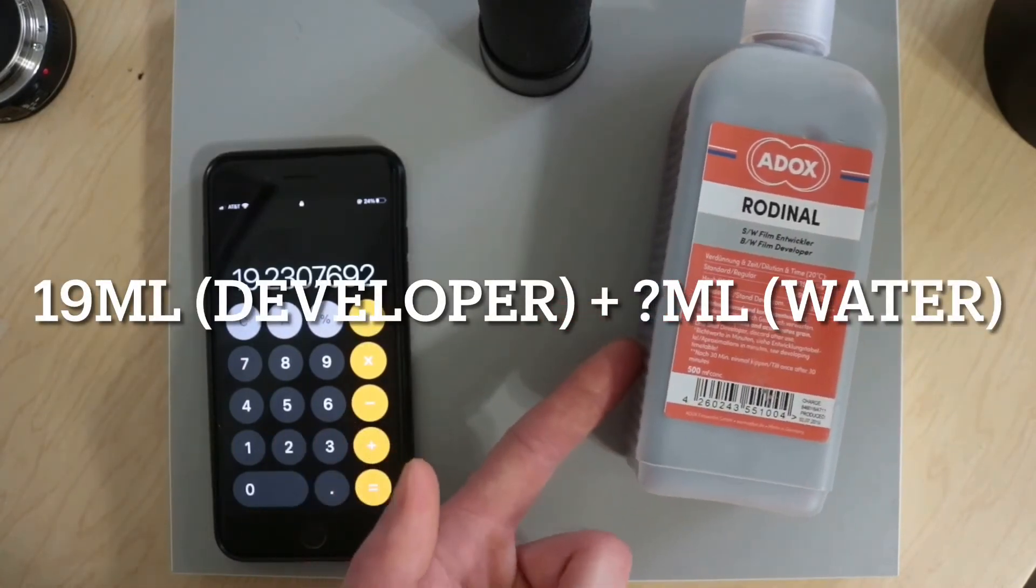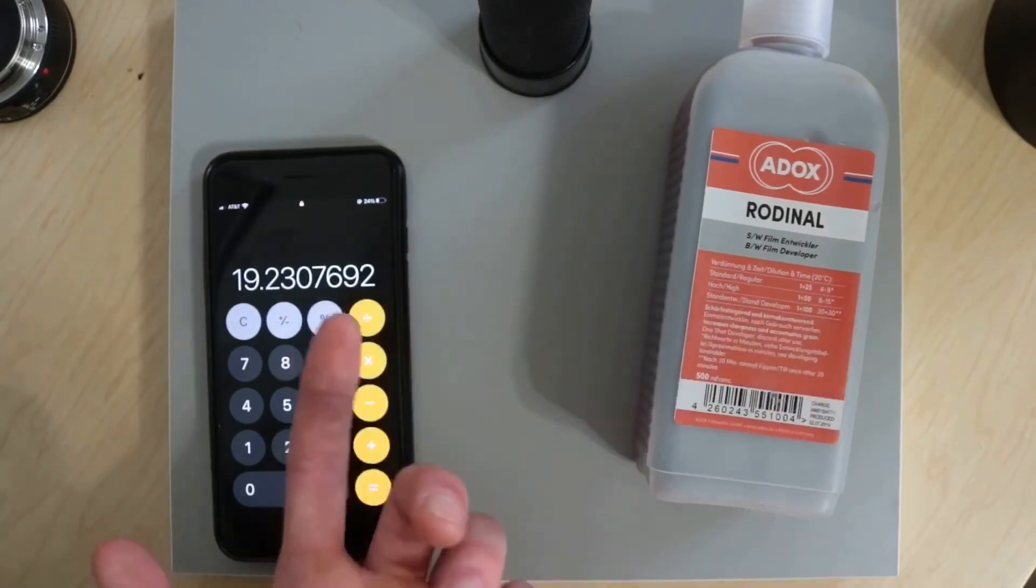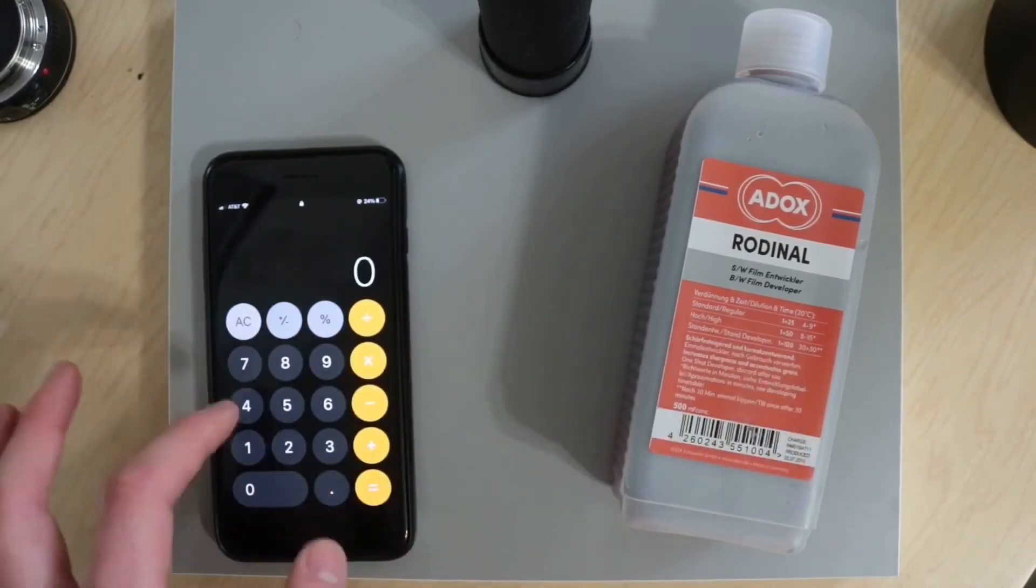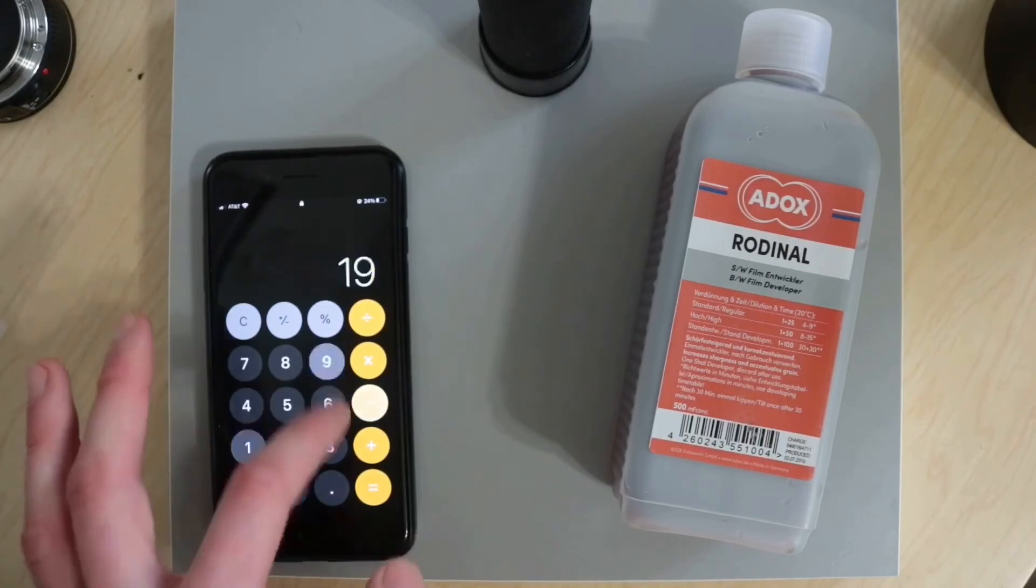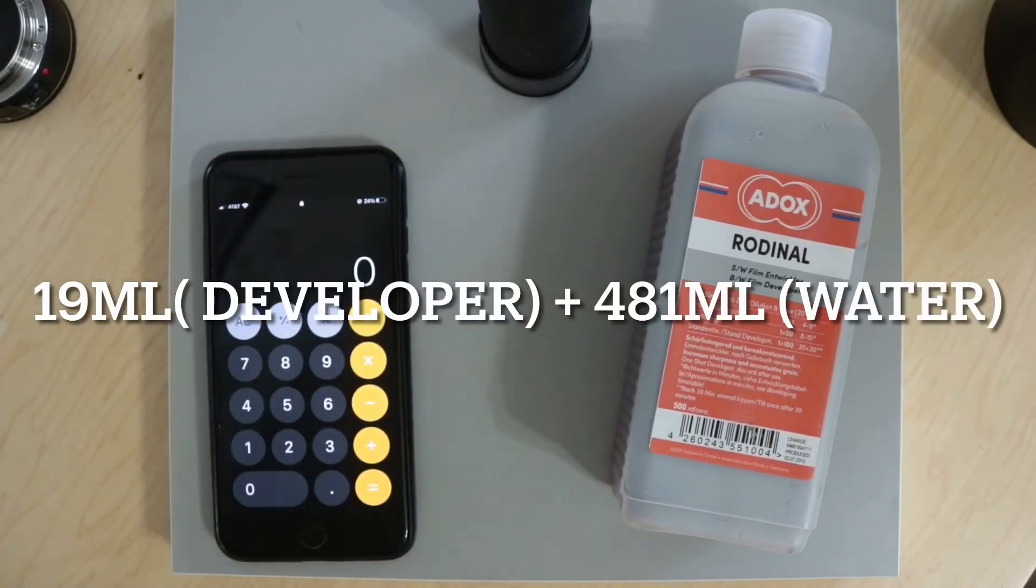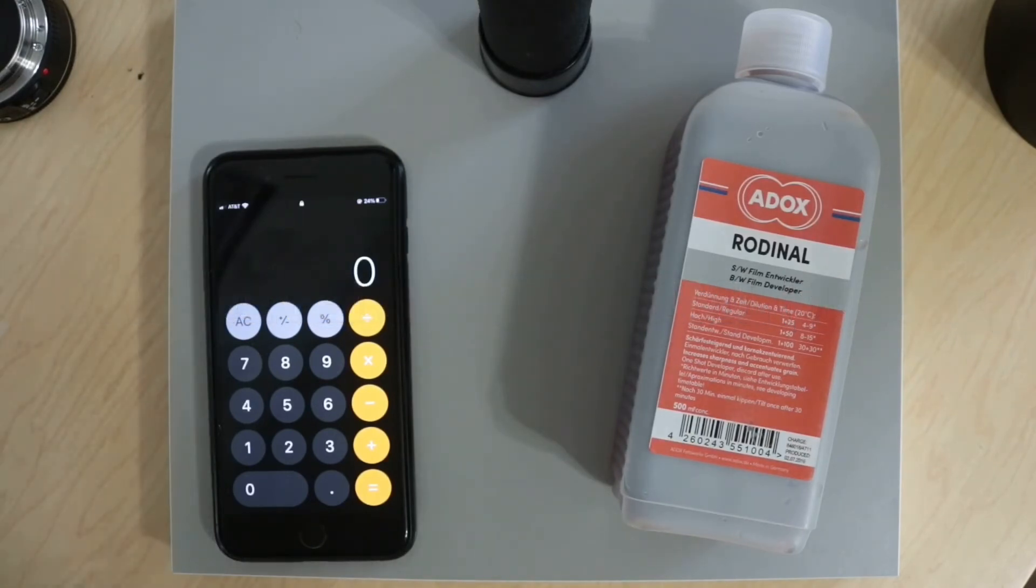And you could use simple math. Just do 500 milliliters minus 19 and you'll get your parts water. So that's going to be 500 minus 19 which is going to give you 481, and that's going to be your parts of water. And that's the simple way how to calculate your dilution.